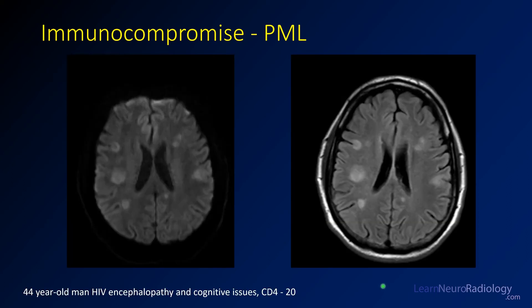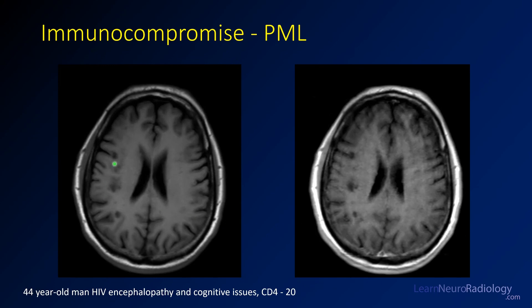Here is a 44-year-old man with HIV, encephalopathy, and cognitive issues with a very low CD4 count. On diffusion, there are areas of hyperintensity particularly in the subcortical white matter and U-fibers. Involvement of the U-fibers is characteristic of only a few diseases, particularly demyelinating diseases such as MS and PML. The lesions are scattered and asymmetric, predominantly involving subcortical white matter. On T1, the involved areas are quite dark, showing patchy loss of myelin with essentially no associated enhancement.